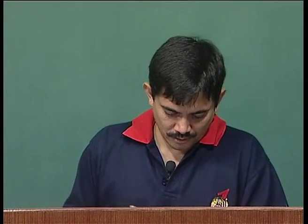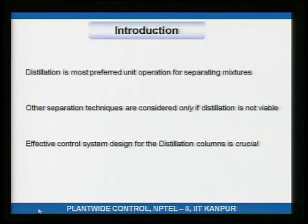The next 5 to 8 lectures will focus on the control of distillation columns. Distillation is the most preferred unit operation for separating mixtures. This is necessary because the effluent from a reactor will always be a mixture of products and unreacted reactants — it is very rare to get complete conversion producing a pure stream that can be sold in the market.